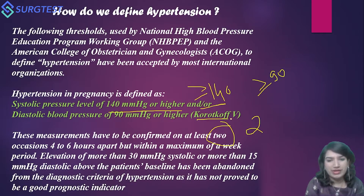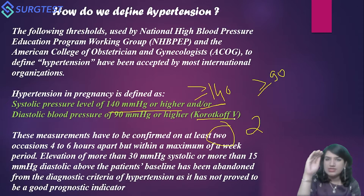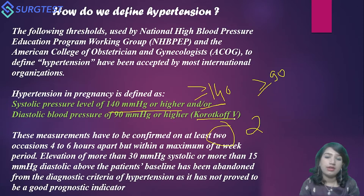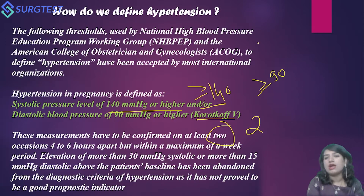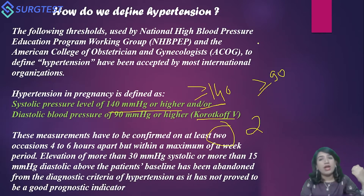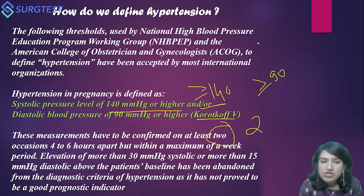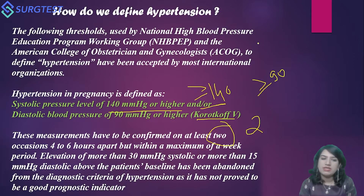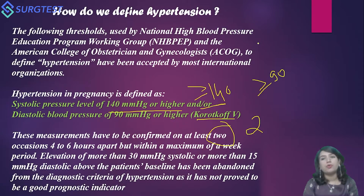Korotkoff 5 refers to the absence of the tapping sounds in the oscillatory method using a mercury sphygmomanometer. Korotkoff 4 is the muffling of the sound. We do not use Korotkoff 4; instead we take the complete disappearance of sounds — Korotkoff 5 — while measuring blood pressure in pregnancy. Elevation of more than 30 mmHg systolic or more than 15 mmHg diastolic above the patient's baseline has been abandoned from the diagnostic criteria, as it has not proven to be a good prognostic indicator.